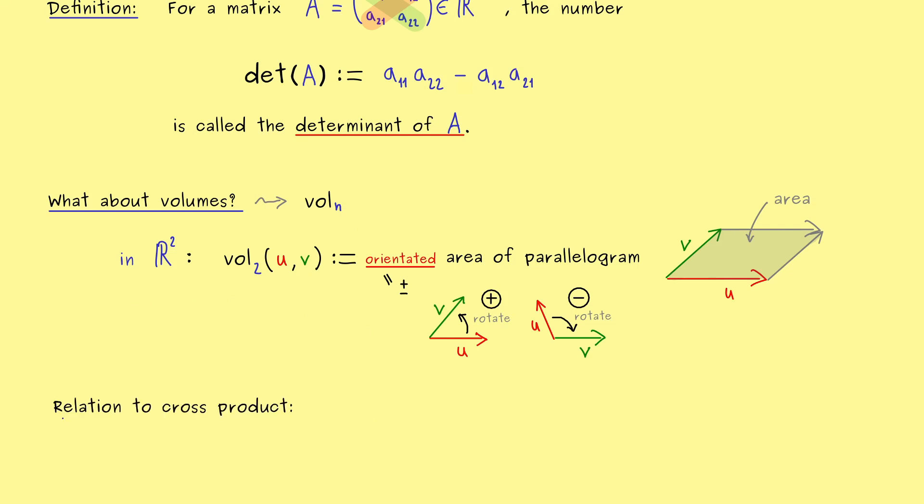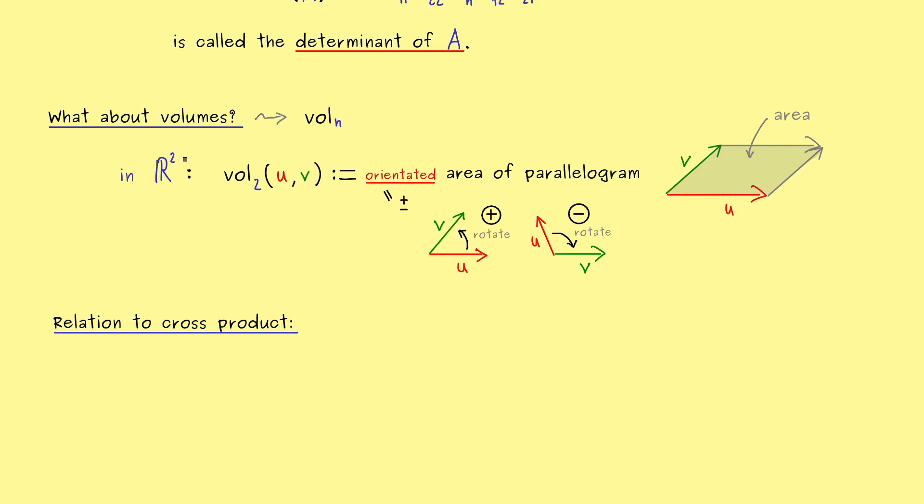And exactly this we can use now to calculate this two-dimensional volume. The only problem we have is that the cross product is only defined in R³. However, this is not a big problem because we can simply embed R² into R³. For example, you could see R² as the xy-plane in R³. This means for the vector u above we can define a new vector ũ.